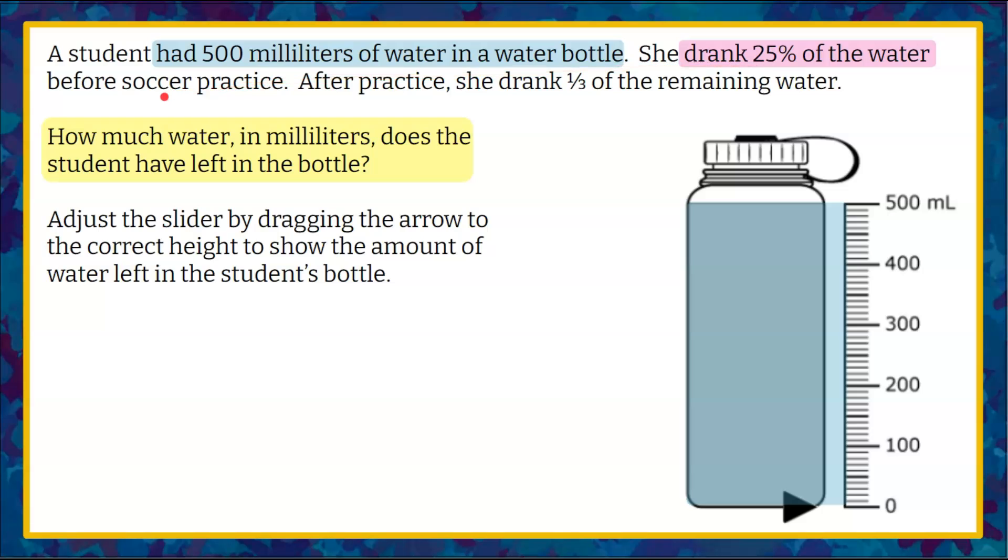The first thing that happens is that she drinks 25% of the water before her soccer practice even begins. So we want to find 25% of the 500 milliliters that are in the bottle.